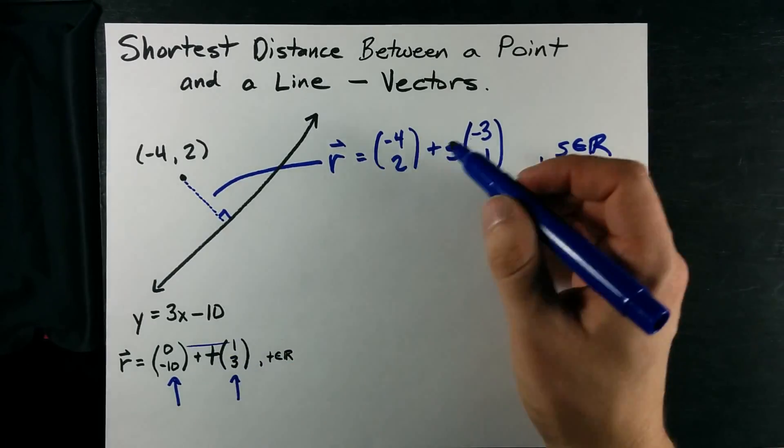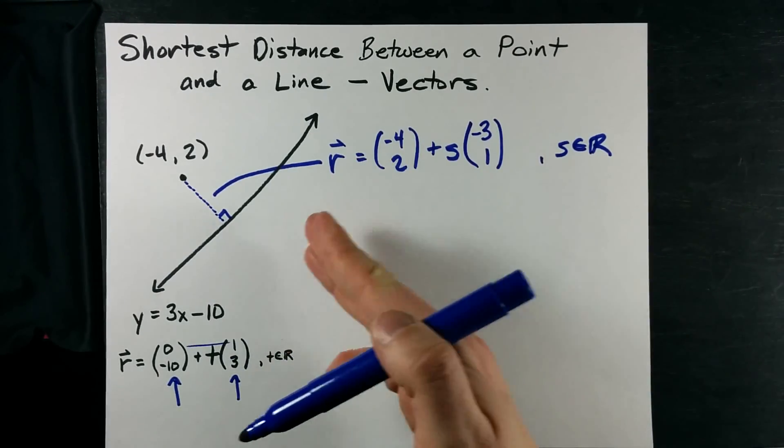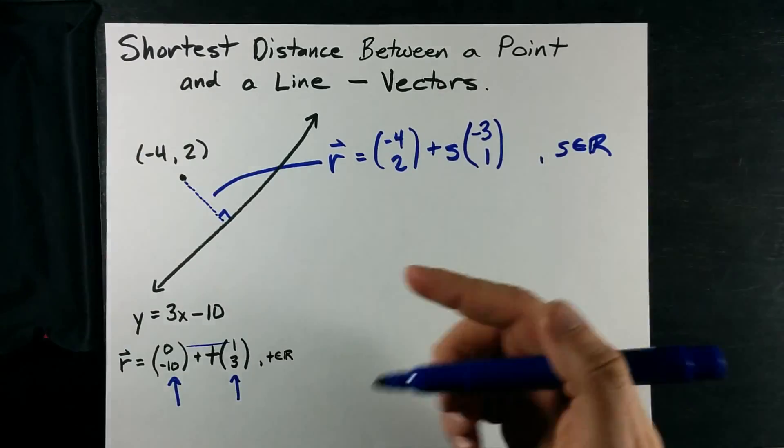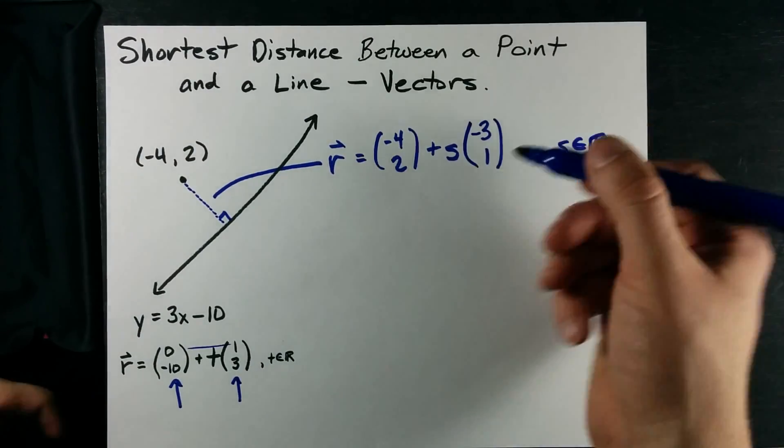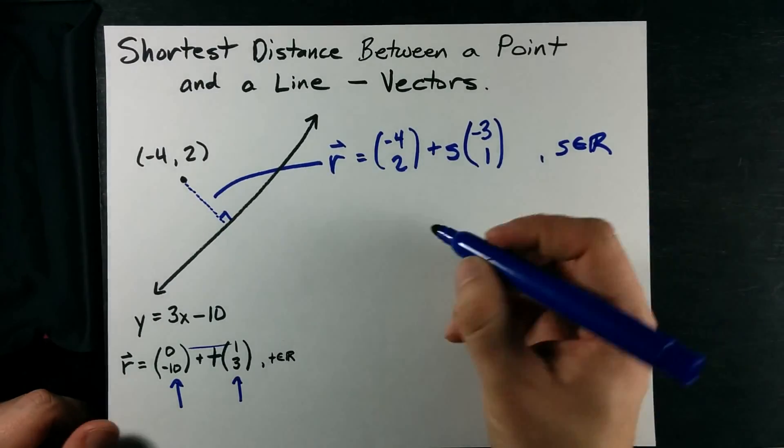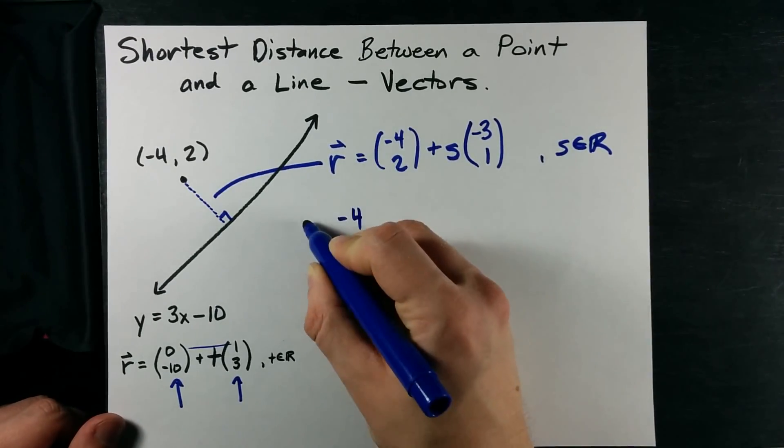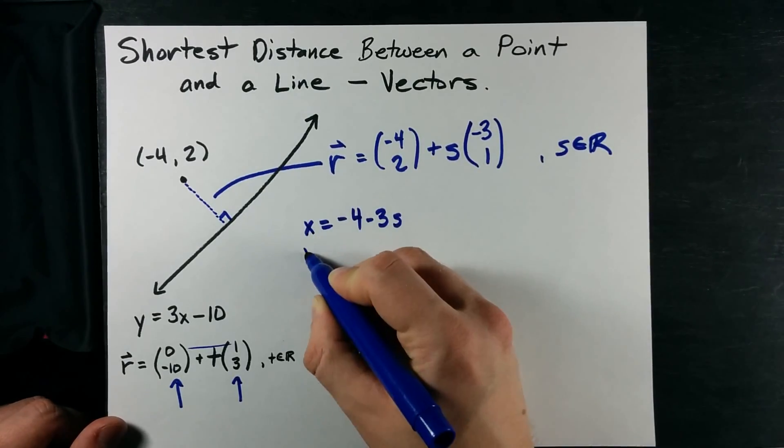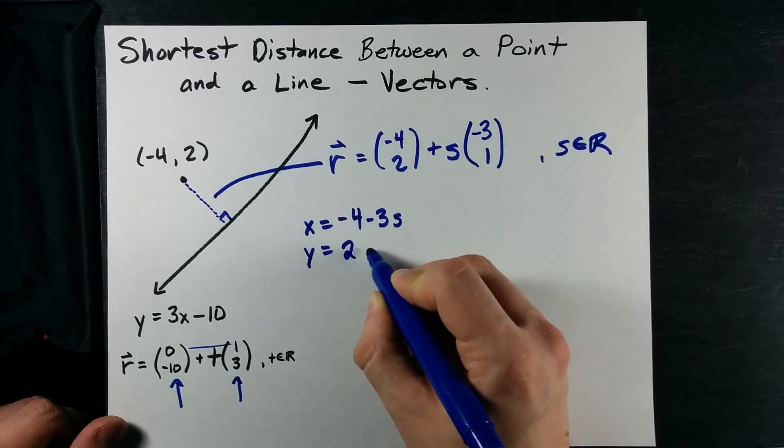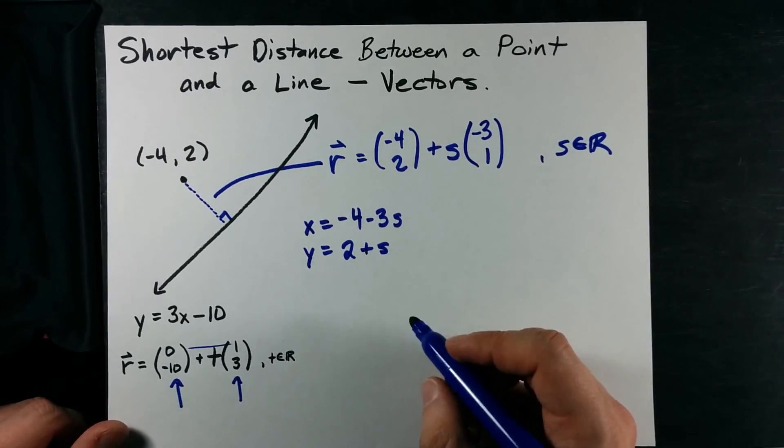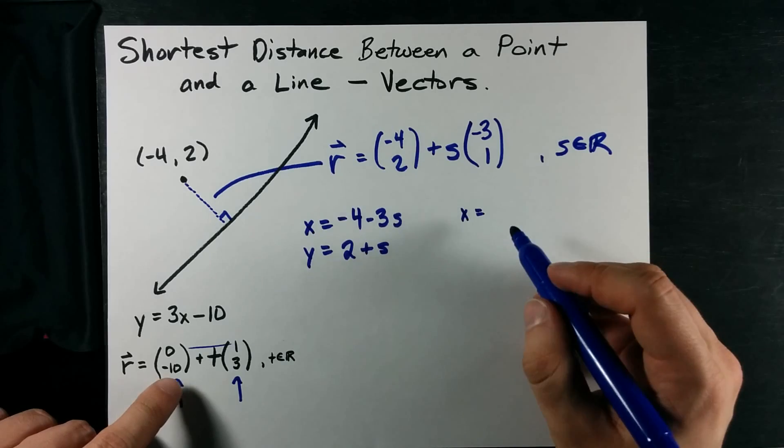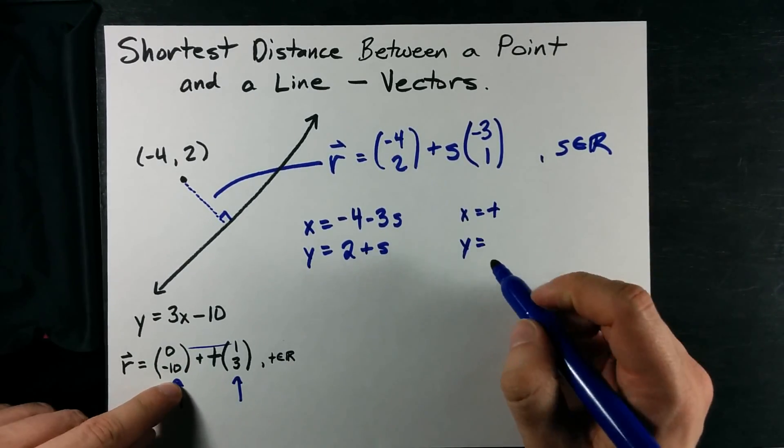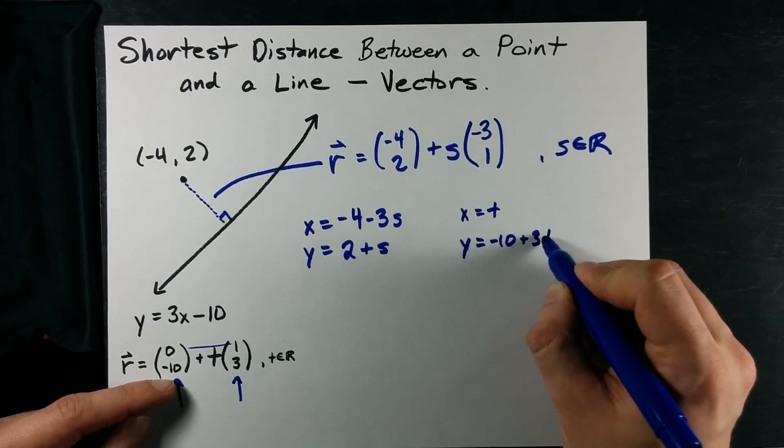Now, we already have the vector equations for the two lines. We simply need to find the point of intersection for both, like where the two lines intersect. I'm going to do that with parametric equations because I feel like it and I'm in charge. My x for this equation is negative 4 minus 3s. My y is 2 plus 1s. And my other equation here is 0 plus t. And my y is negative 10 plus 3t.